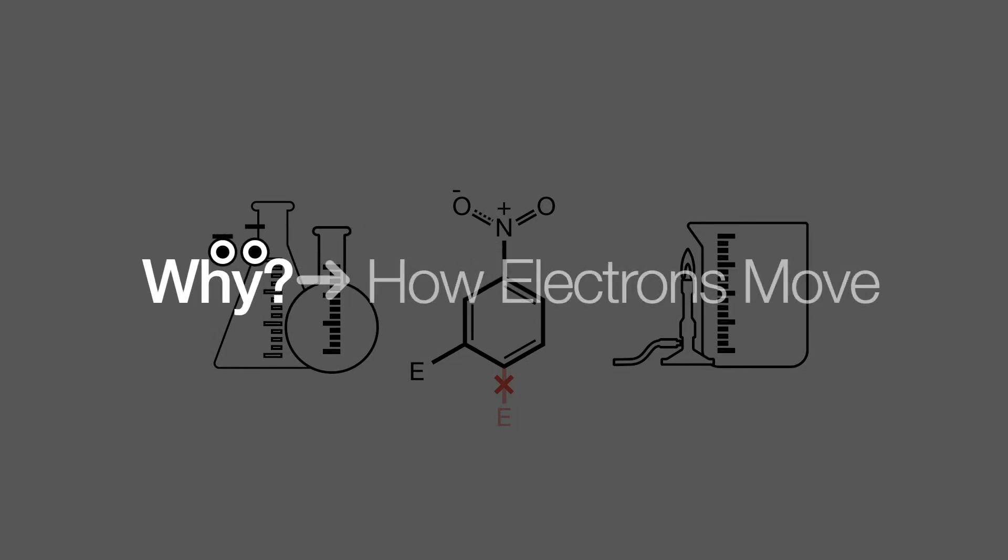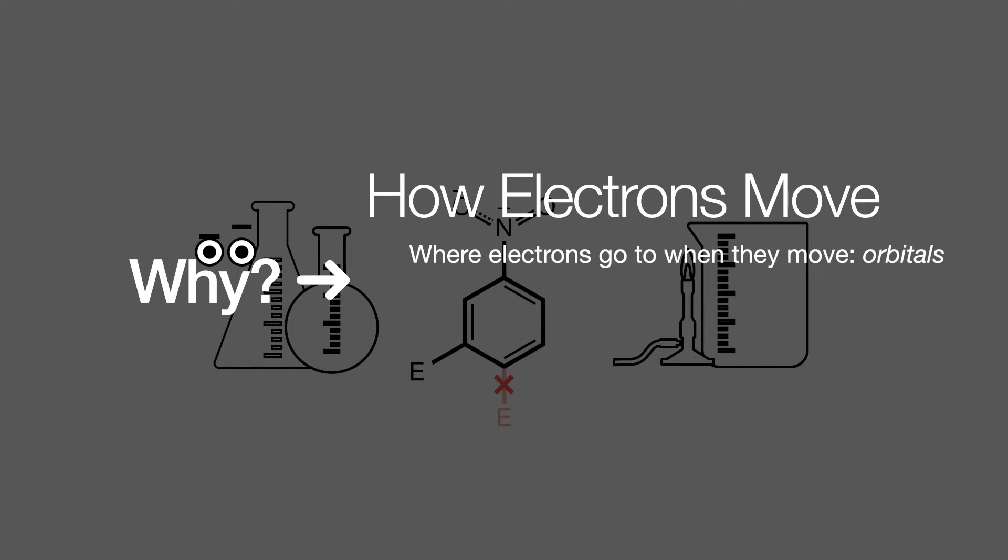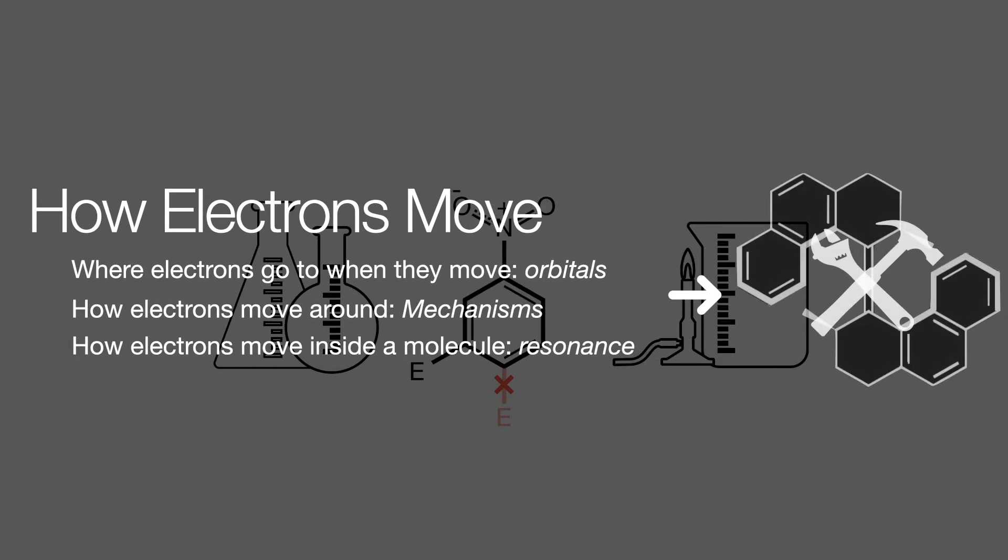And the answer to that is how electrons move. And so by the end of this video, not only are we going to uncover the answer and find a way around this problem, but we are also going to understand some of the most basic elements of organic chemistry. Where electrons go when they move, how electrons move around, and apply both of these to understanding how electrons move around inside a molecule. These skills are going to be an important part of your toolkit for your organic chemistry journey. So buckle up and let's get started.